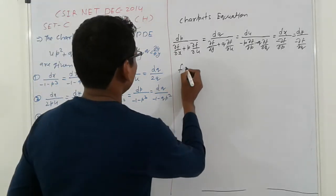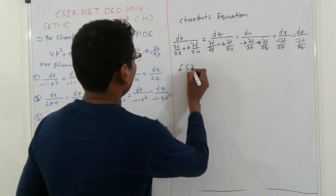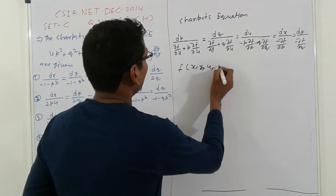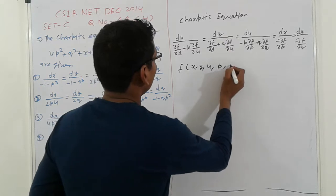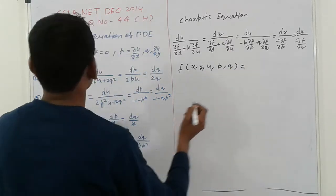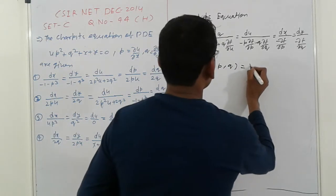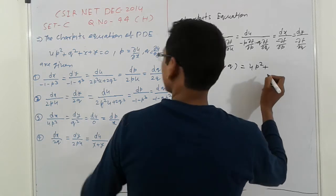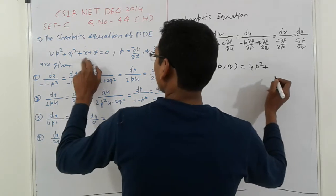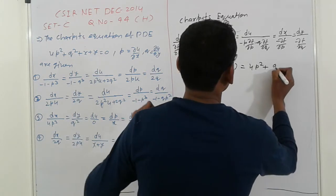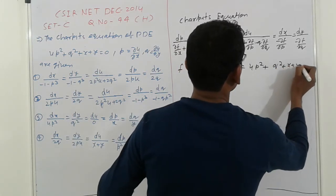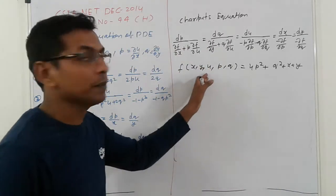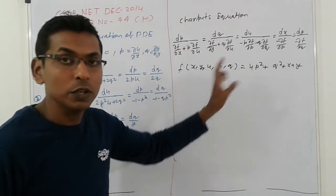The given function is F(X, Y, U), which equals U times (P squared plus Q squared) plus X plus Y. Here, Z is replaced by U.